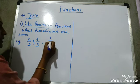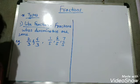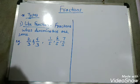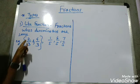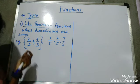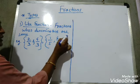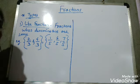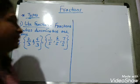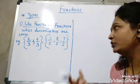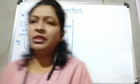Or we can write: 1 upon 5, 6 upon 5, 7 upon 5 — these are also a group of like fractions. Why? Because their denominators are the same. So like fractions are fractions whose denominators are the same.